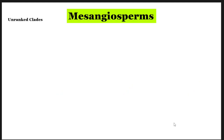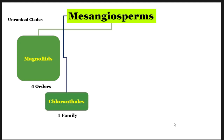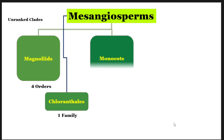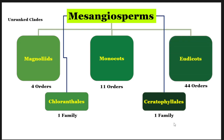Mesangiosperms, an unranked clade, has been further divided into magnolids comprising four orders. Between them there is a distinct order called Chloranthales. Then monocots come with eleven orders, and another order called Ceratophyllales with one family appears before eudicots, which come with 44 orders. These clades under mesangiosperms are not ranked like division or subdivision but are simply termed clades.